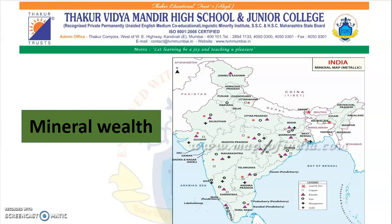Next is mineral wealth. In this map, different symbols are given along with the names of minerals. You can find in India the places which are abundant with minerals. Iron and coal play a major role in the industrial development of the country. We have adequate — plenty of stores of iron, manganese, coal and mineral oil in our country. A variety of minerals are available across the whole of India.